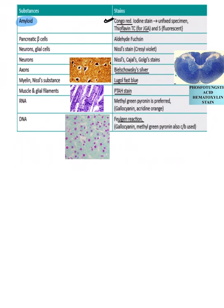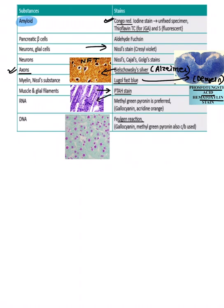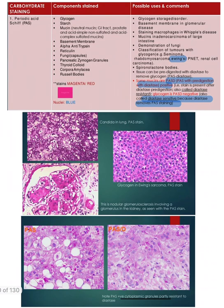Amyloid: classical stain is Congo red — cannot forget. For neurons: Nissl stain; for axons: Bielschowsky silver stain — used in Alzheimer's disease to identify neuritic plaques and neurofibrillary tangles. Myelin: Luxol fast blue — used for demyelinating disorders to identify loss of myelin. Muscle: PTH stain (phosphotungstic acid hematoxylin). DNA: Feulgen stain — appears pink, DNA acts as fuel, so Feulgen/fuel stain.